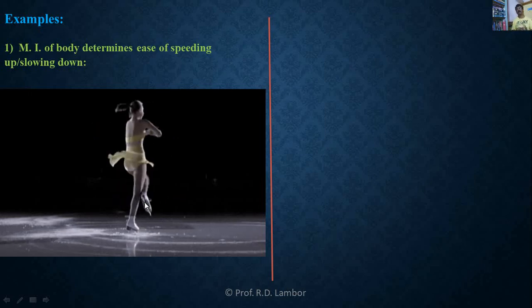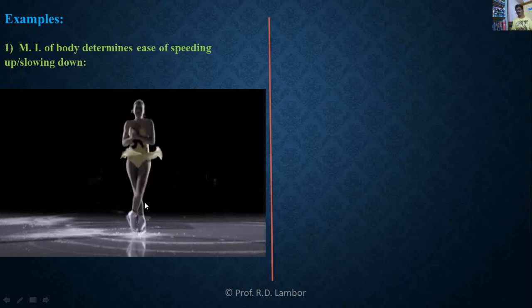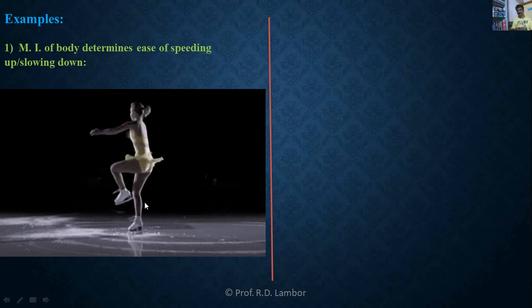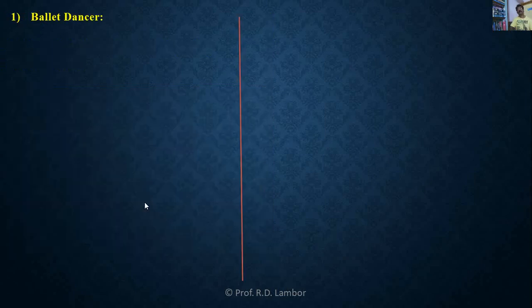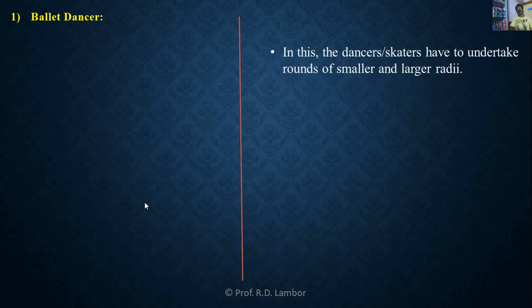This was the first example — how the moment of inertia of the body determines the ease of speeding up or slowing down a rotating body. Now we will consider the second example, in which how ballet dancers are using the principle of conservation of angular momentum.